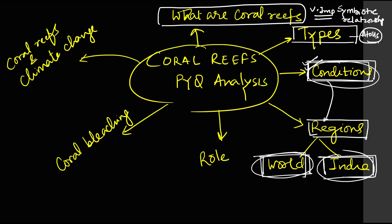One popular question in the UPSC Prelims on coral reefs is: why are coral reefs found mostly in tropical waters? The reason is that coral reefs cannot survive below 18 degrees Celsius. Similarly, coral reefs need saline water for survival, so if there is a high influx of fresh water, coral reefs will not survive. This shows how one theme connects to another — that is why you should have an analytical approach towards your preparation.